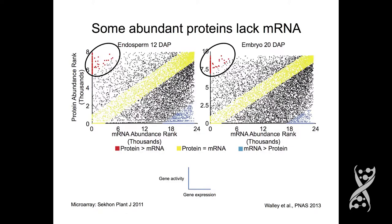Here's another way of viewing it — rank abundance values for messenger RNA and protein for a couple of different tissues. If you happen to be working with genes in the high-expression region, you'll have a good correlation between RNA and protein and RNA measurements will be predictive. But we see lots of messages, including extremely abundant ones, from which no protein is detected. Likewise, we see many highly abundant proteins from which little or no mRNA is detected. The position of a gene on this plot in one tissue is very different in another tissue — it's dependent on context, not a characteristic of the gene.